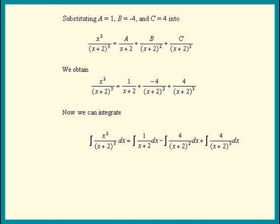So the answer is ln of absolute value x plus 2 plus 4 over x plus 2 minus 2 over x plus 2 squared plus c.